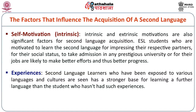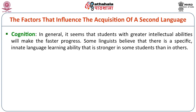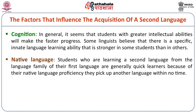Experience is another factor: second language learners who have been exposed to various languages and cultures have a stronger base for learning a further language than students with no such experience. In terms of cognition, students with greater intellectual abilities generally make faster progress, and some linguists believe there is a specific innate language learning ability that is stronger in some students. Students learning a second language from the same language family as their first language are generally quick learners — for example, someone who knows German well will find it easier to learn English, and someone proficient in Hindi will find it easier to learn Sanskrit.